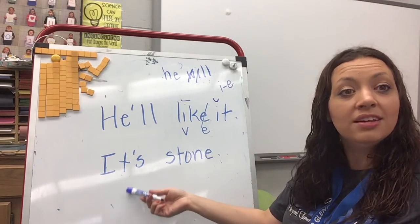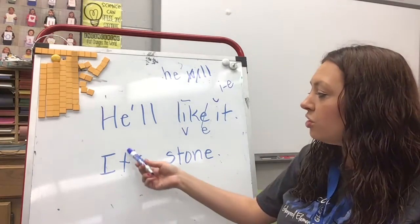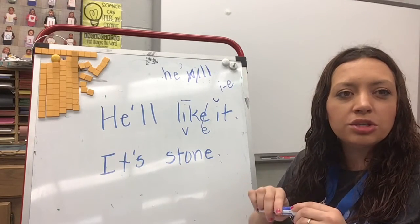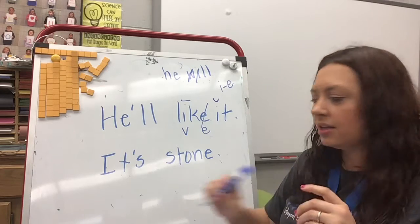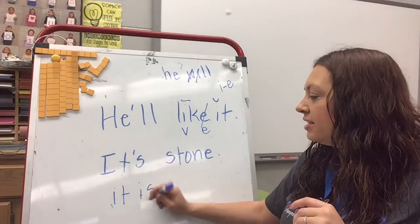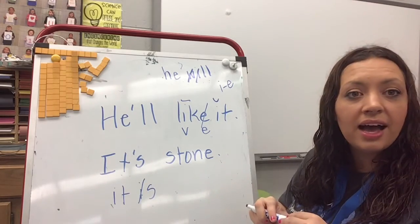All right, down here we have another contraction. You can see that apostrophe, and so this is the word it's. What two words do you think it's stands for? That's right. It stands for it is. So that apostrophe takes the place of the I.